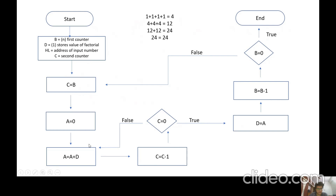Since D was equal to one and C was equal to four, this loop will be executed four times — it takes four decrements to bring C to zero. So D, which equals one, is added to A four times. Since A was initially zero, after addition it becomes four. So A equals four and C equals zero. Now this block is true, and in the next block we set D equal to A, so D becomes four. Then we decrement B by one — B was four, now it becomes three.